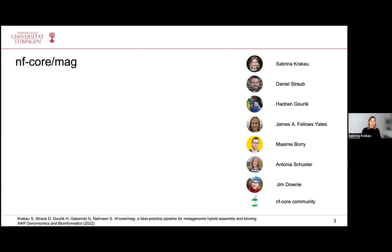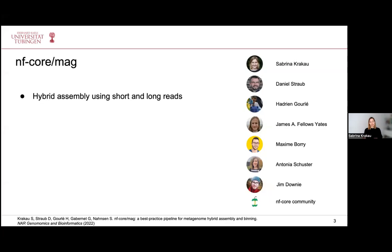The key features of this pipeline include a hybrid assembly using both short Illumina and long Nanopore reads. This is useful because assemblies generated from only short reads are often highly fragmented, and using additional longer reads can improve the contiguity of the resulting assemblies.